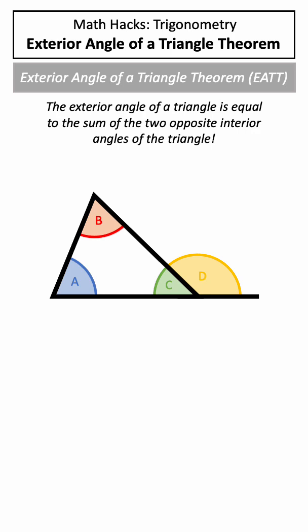Now the exterior angle of a triangle theorem states that the exterior angle of a triangle is equal to the sum of the two opposite interior angles of the triangle, so angle D would be equal to the sum of angle A and angle B, and we can see that visually here.